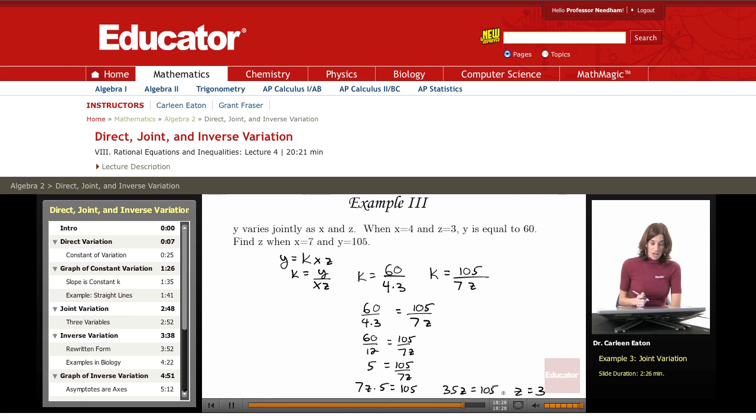Again, another way to solve this would have been to just say the constant of variation is 60 divided by 12, or 5. Knowing what the constant of variation is, I could have just substituted that here and then solved for z. So you can either use the proportion or find the constant of variation, and then use the second set of values and find the missing variable.